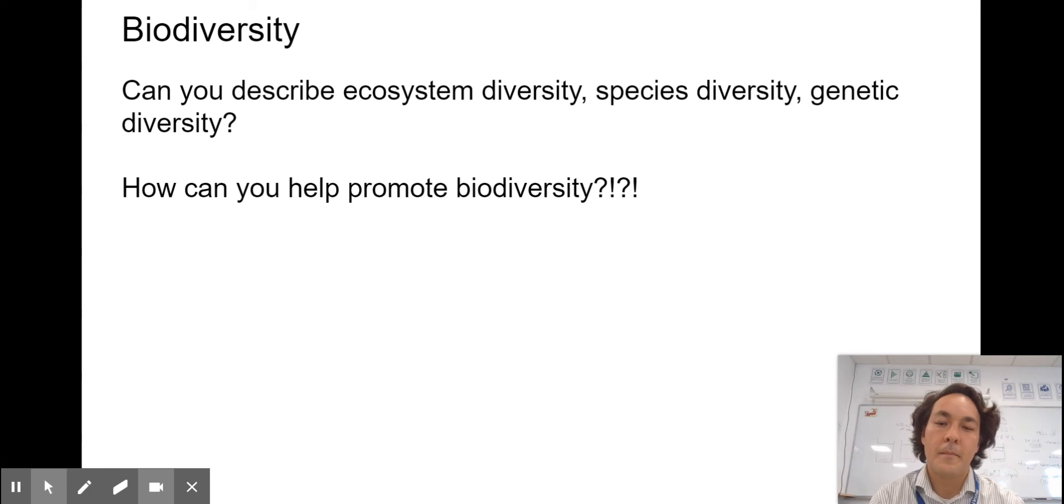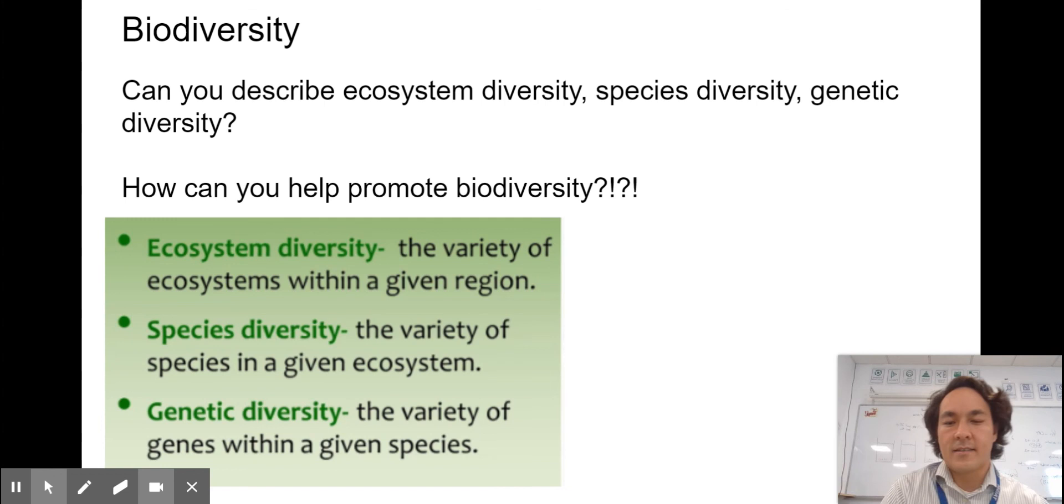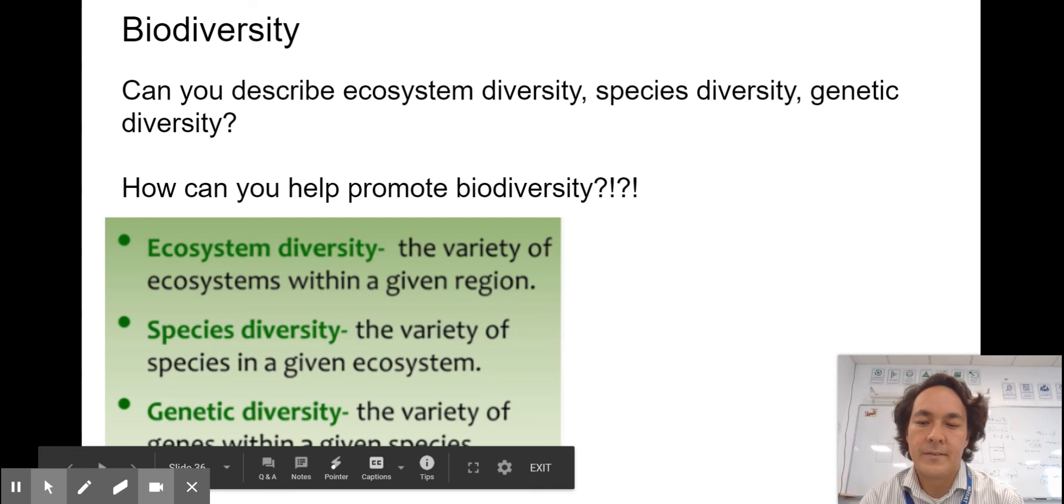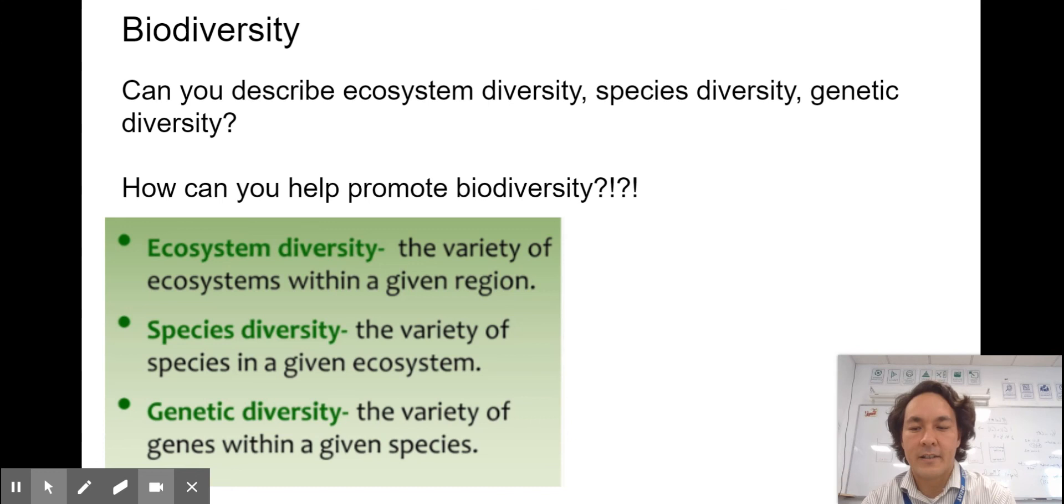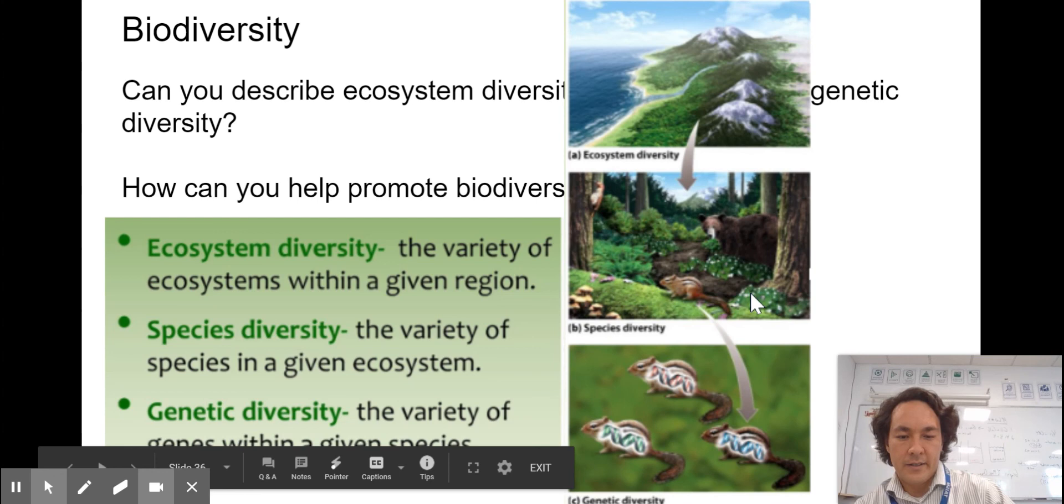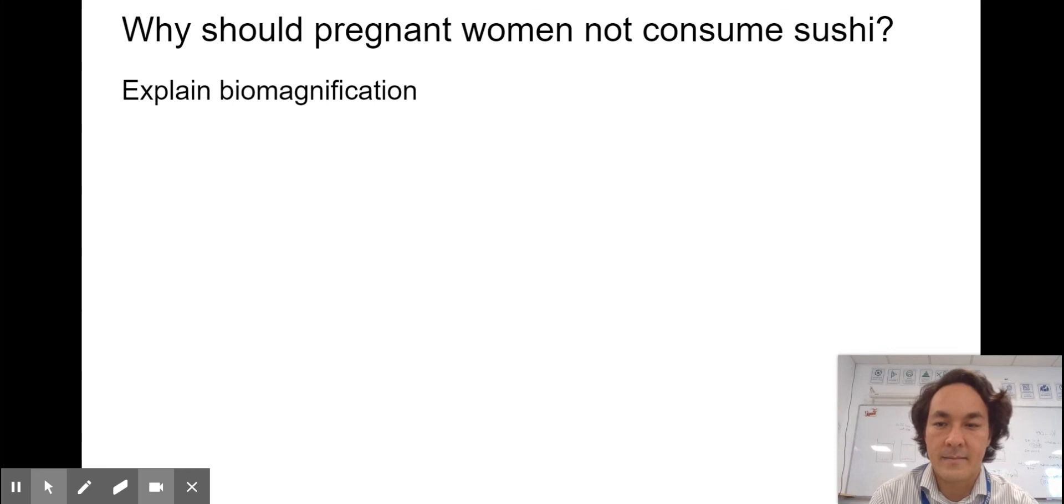Biodiversity. Can you describe ecosystem diversity, species diversity, and genetic diversity? And how can you help promote biodiversity? Ecosystem diversity is the variety of ecosystems within a given region. Species diversity is the number of different species in a given ecosystem. Genetic diversity is the variety of genes within a given species. When the potato famine happened in Ireland, there wasn't a lot of genetic diversity there.